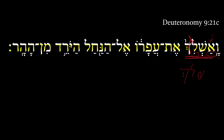So: 'and I threw' — what did you throw? Direct object marker here. It's 'dust,' or 'the dust of it.' The 3ms pronoun there is a reference back to the calf, or the bull.